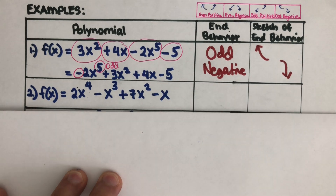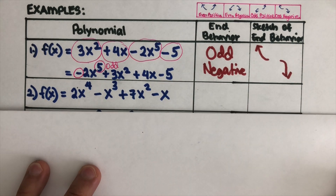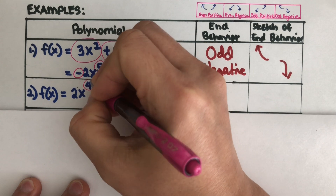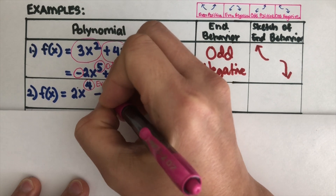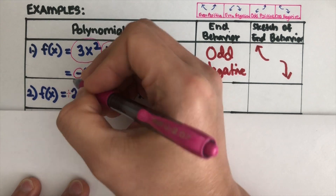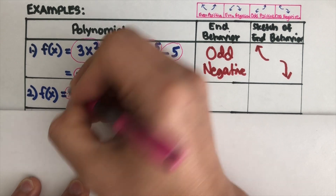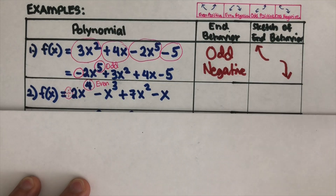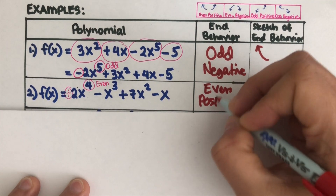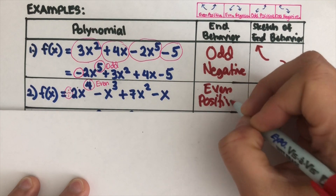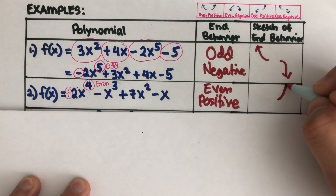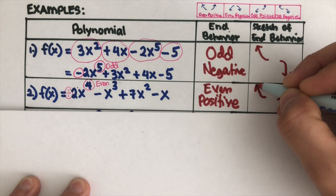The next example is 2x to the fourth. The highest exponent is 4, which is even, and there's an invisible positive sign on the leading coefficient, so this is even positive. The graph is going to go up on both ends.